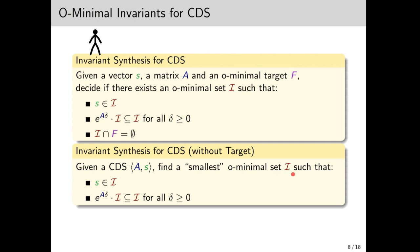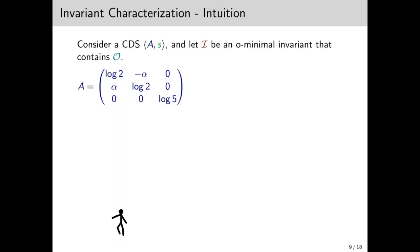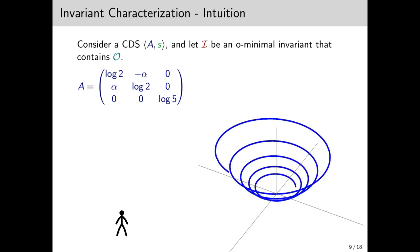So we're just searching for some O-minimal invariant. But in order to make it interesting, we want it to be minimal in some sense. So we can't just take the entire space as an invariant, for example.